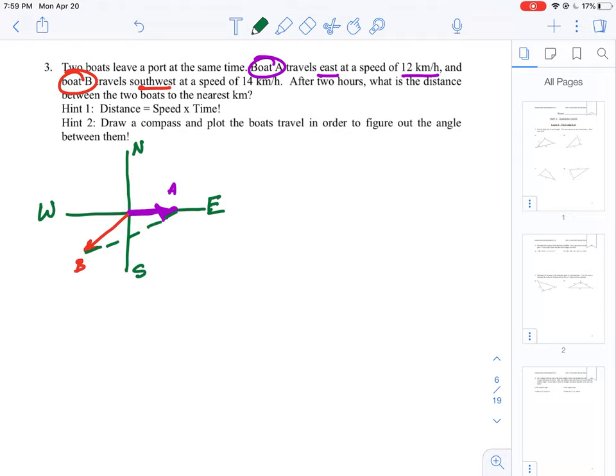We are looking to find this distance and we can call this distance X. We need to figure out some quantities here of what we've got, and then we can apply one of the trigonometric laws in order to find the unknown.